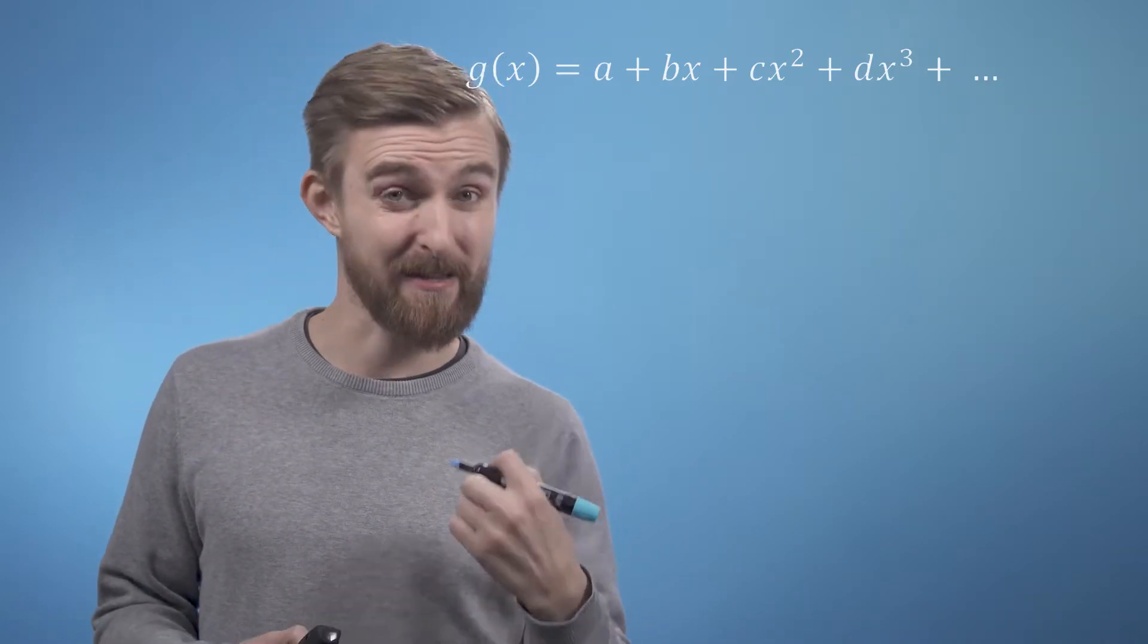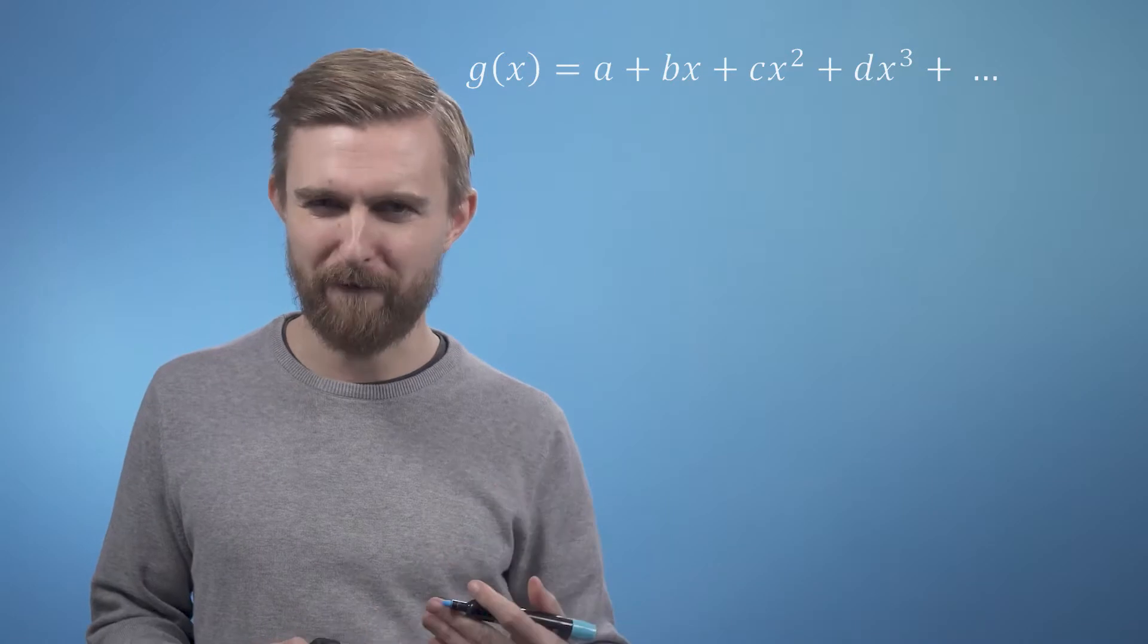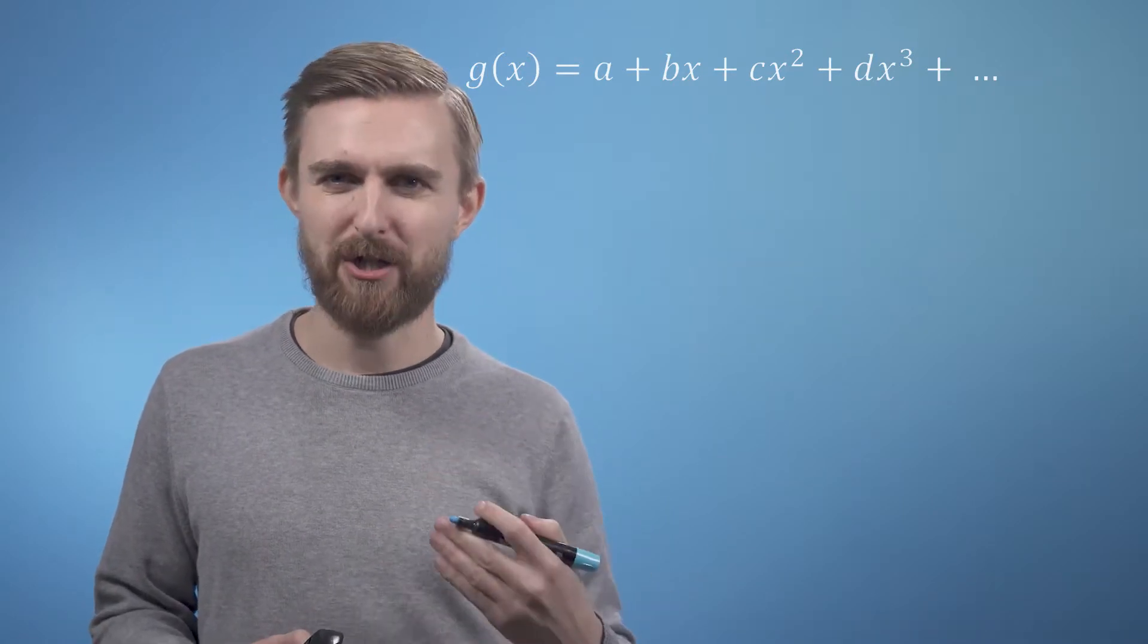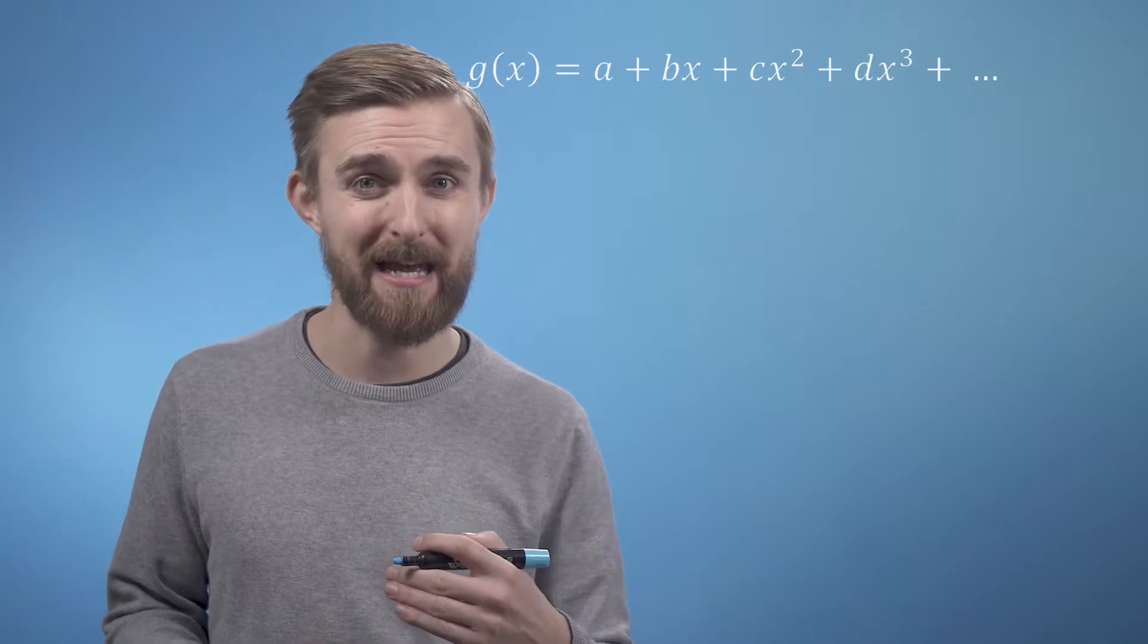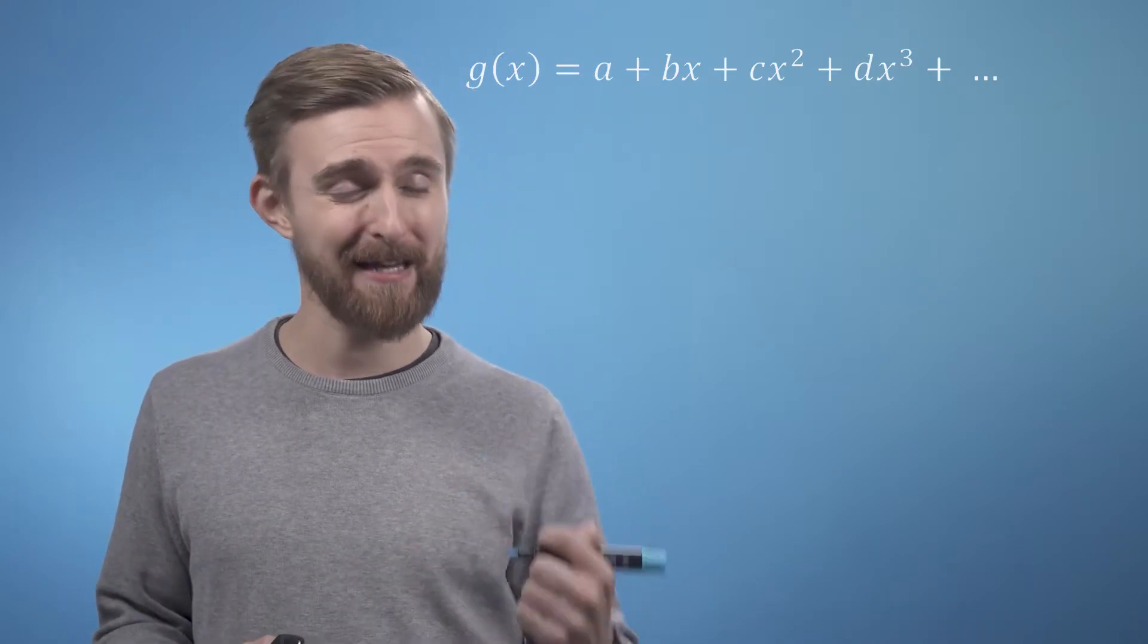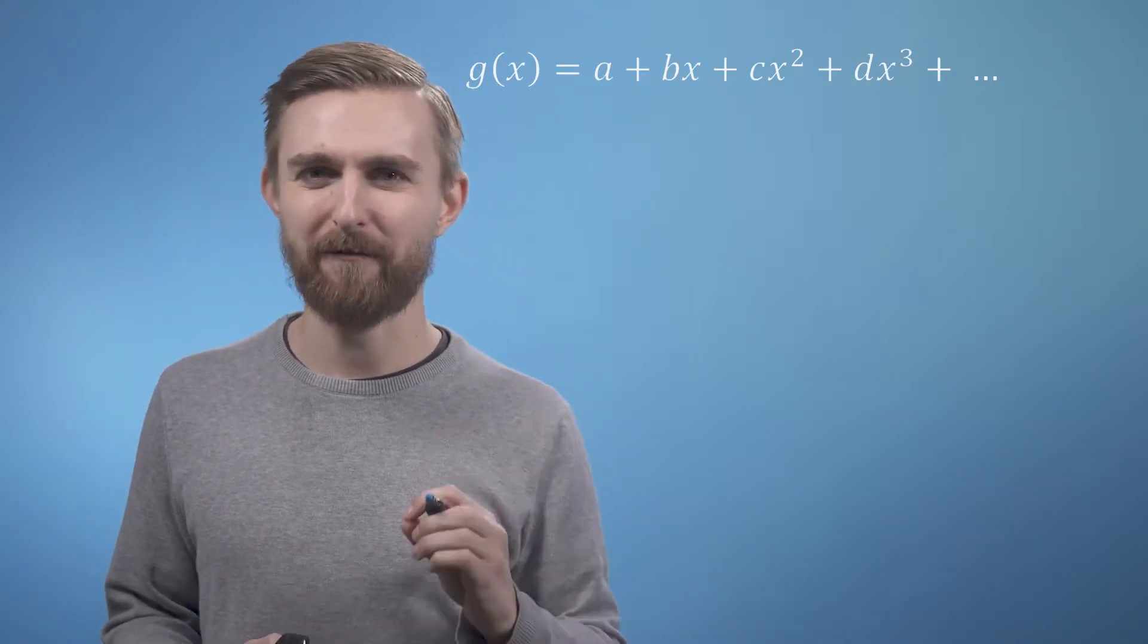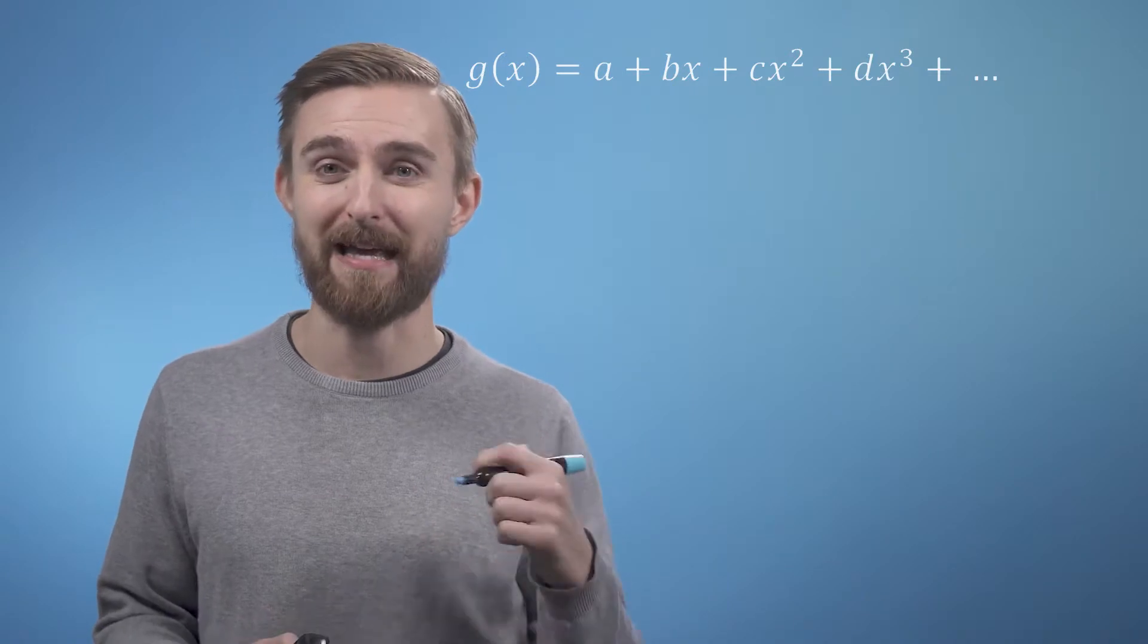When we calculate a Taylor series in the next video we will build it up coefficient by coefficient, where each term that we add improves the approximation. And in many cases we will then be able to see a pattern emerge in the coefficients, which thankfully saves us the trouble of calculating infinitely many terms.